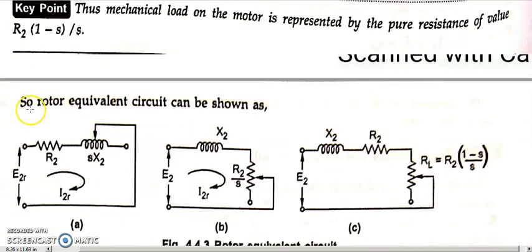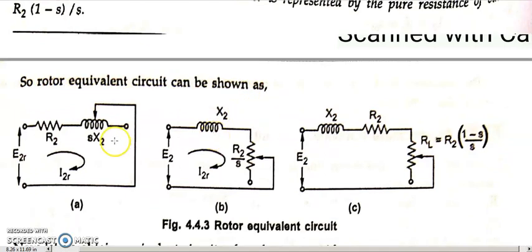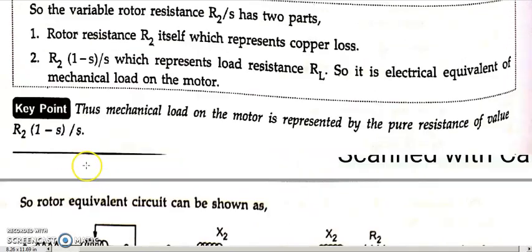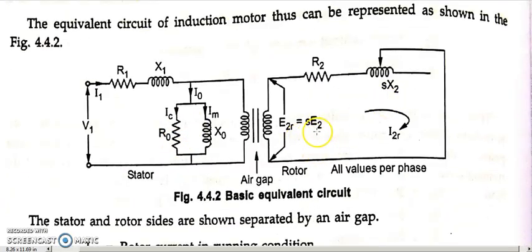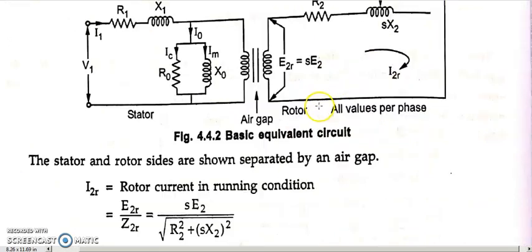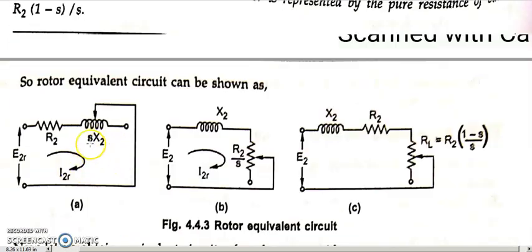Here you can see the rotor equivalent circuit — they have written the rotor circuit when referred to the primary. They are writing the rotor circuit in three forms. The first one is the rotor equivalent circuit where E2, R2, S, X2 are present — you know how this rotor circuit has come. The second one has E2 and X2 in series with R2/S. Both forms are electrically equivalent.